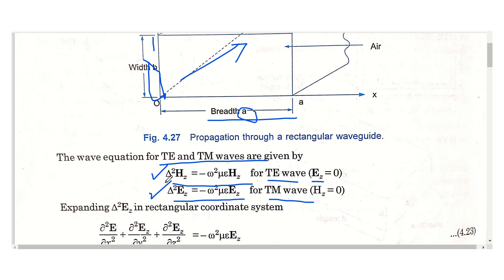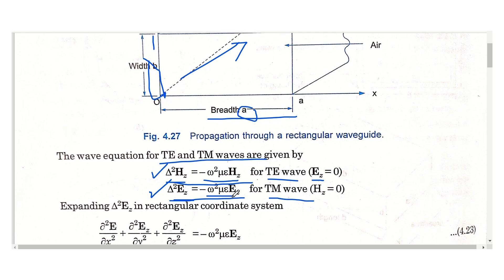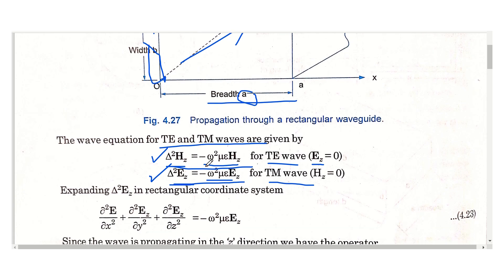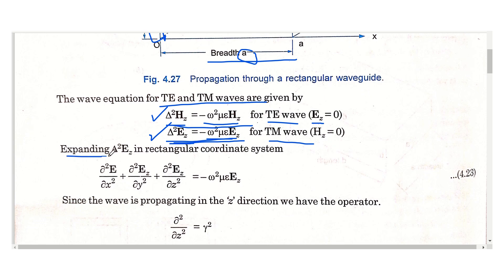The wave equation for the TE wave is: del-squared Hz equals minus omega-squared mu-epsilon Hz. And the wave equation for the TM wave is: del-squared Ez equals minus omega-squared mu-epsilon Ez. Now consider the TM wave equation: del-squared Ez equals minus omega-squared mu-epsilon Ez, and expand del-squared Ez in the rectangular coordinate system.